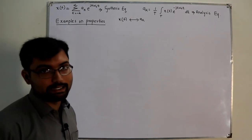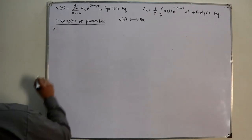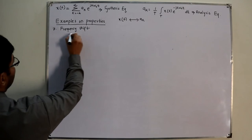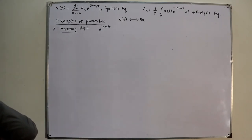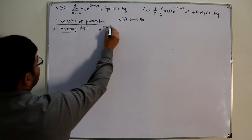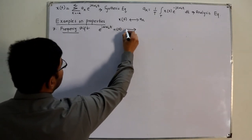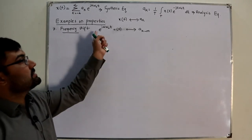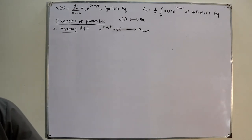The seventh property is frequency shifting. If you multiply x(t) by e^(jmω₀t), the Fourier coefficients shift to a_(k-m). If m is positive, you have a negative-m shift in the spectrum; if m is negative, you have a positive-m shift.